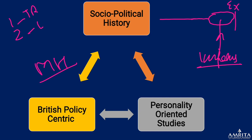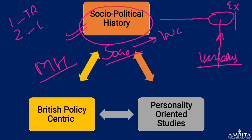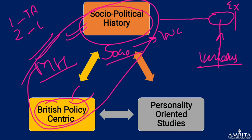With respect to modern history, we read it from a socio-political perspective — different social movements like Brahmo Samaj, Ishwar Chandra Vidyasagar, then the political side: INC, Swadeshi movement, Non-Cooperation movement. We also read it from a British policy-centric angle — education policy and policies during the British period. However, there is one more type that we sometimes miss out on.